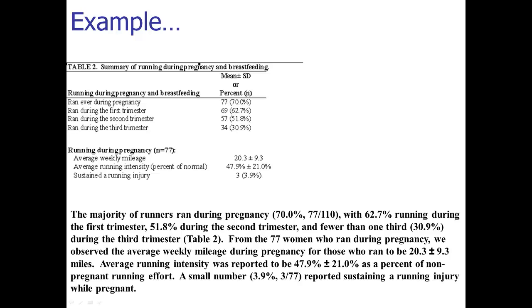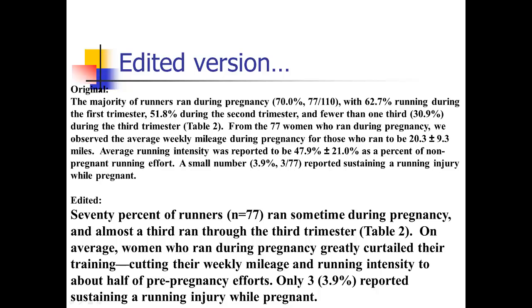The reader needs you to give a higher-level interpretation that's more informative and more concise. I edited it to: '70% of runners ran sometime during pregnancy, and almost a third ran through the third trimester (table two). On average, women who ran during pregnancy greatly curtailed their training, cutting their weekly mileage and running intensity to about half of pre-pregnancy efforts. Only three reported sustaining a running injury while pregnant.' Notice I kept in a couple of numbers, but I'm picking the most important ones to highlight and wherever possible giving complementary numerical information.